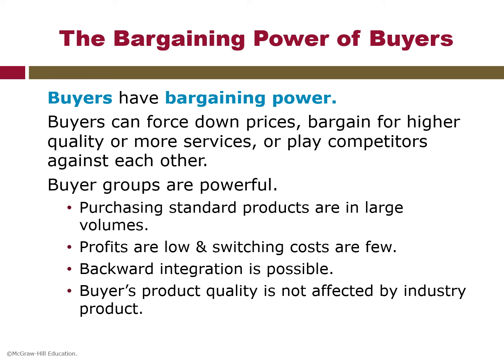When buyers earn low profits, this creates an incentive to lower purchasing costs. On the other hand, highly profitable buyers are generally less price sensitive. Buyers also gain power when they pose a credible threat of backward integration — if buyers are partially integrated or pose a credible threat of backward integration, they are typically able to secure bargaining concessions. Another point is when the industry product is unimportant to the quality of the buyer's product or services.